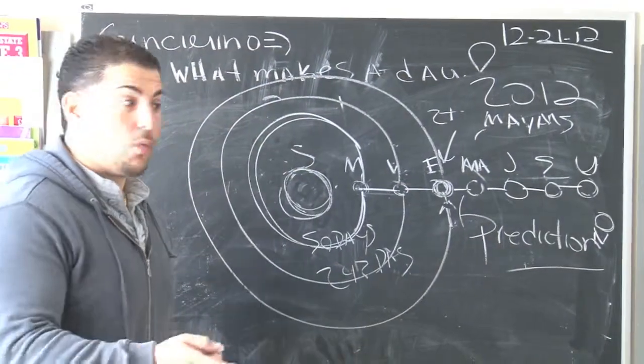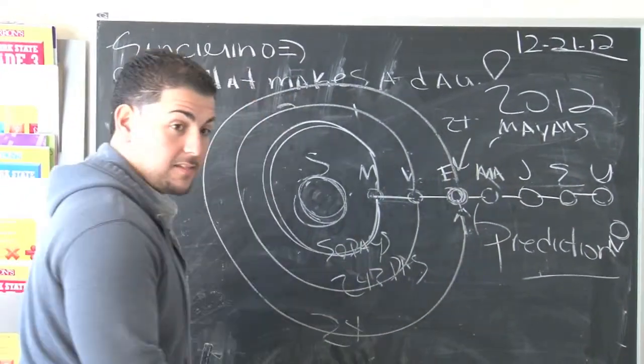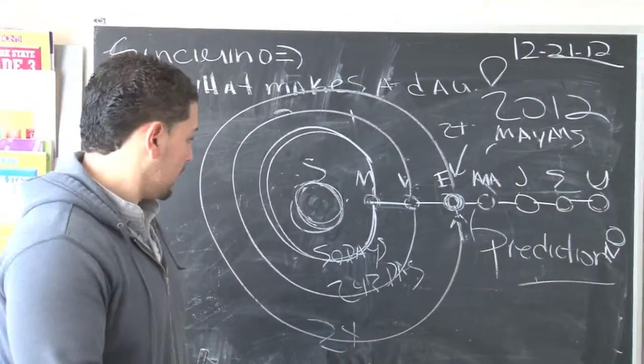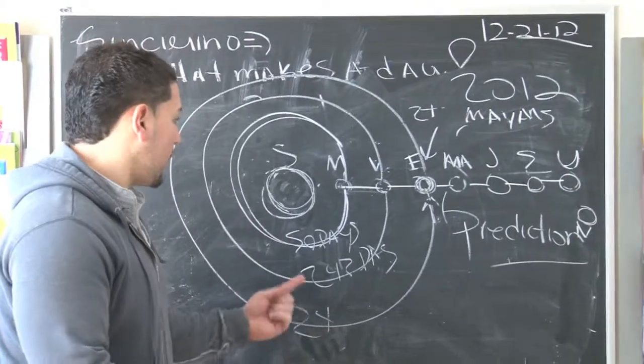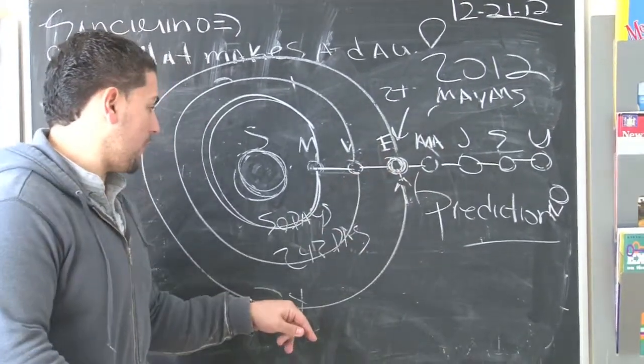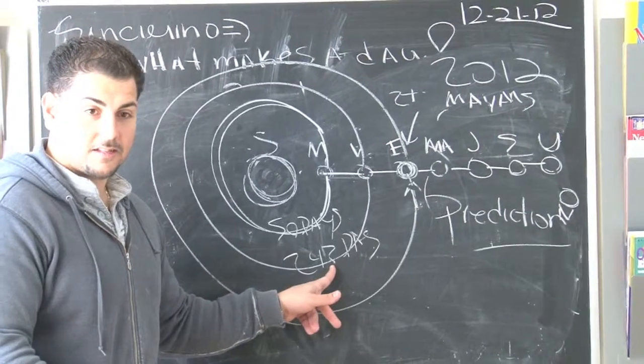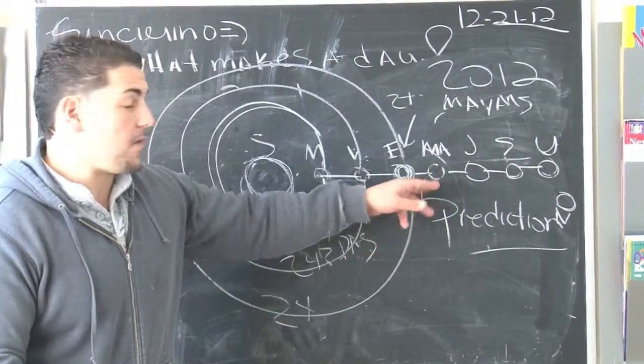Now what about for the Earth? 24 hours. Would you say that the Earth is spinning pretty fast? No. For this to make a full rotation, it takes 24 hours. What about Mars? 24 hours and 37 minutes.